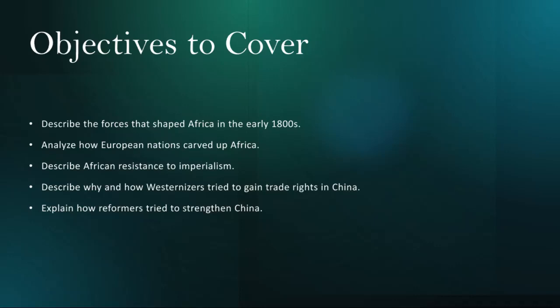Despite European colonization efforts, African resistance to imperialism persisted. Leaders like Ethiopia's Emperor Menelik II and the Mahdist movement in Sudan fiercely resisted European encroachment, often employing military tactics and diplomatic maneuvers to defend their sovereignty. Additionally, resistance movements like the Mau Mau uprising in Kenya and the Boxer Rebellion in China exemplify the resilience of indigenous peoples against foreign domination.